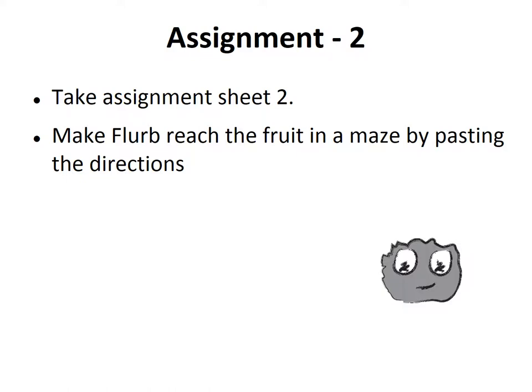Now, take out the second assignment. Fleur would like to reach the fruit in the maze — can you help Fleur do that? You need to take out the direction blocks and paste them one block each such that Fleur moves to the fruit. Can you find the way in which Fleur can reach the fruit in the quickest possible way? That means it has to take the smallest number of steps. How many such steps will it require, do you think?